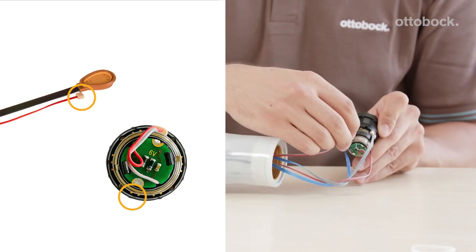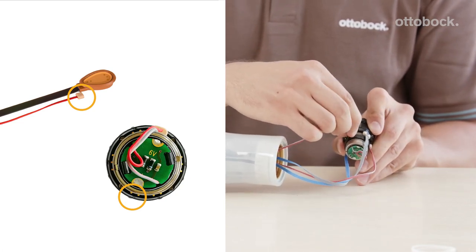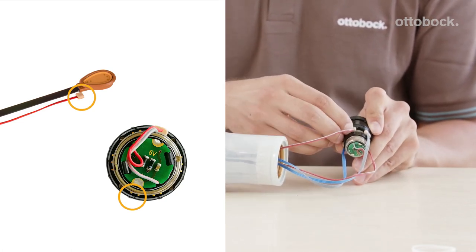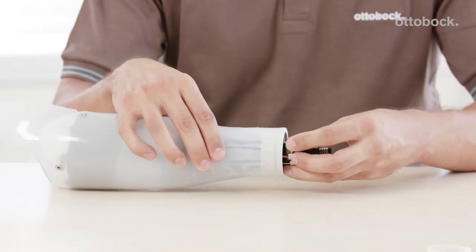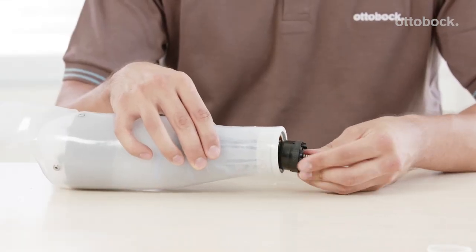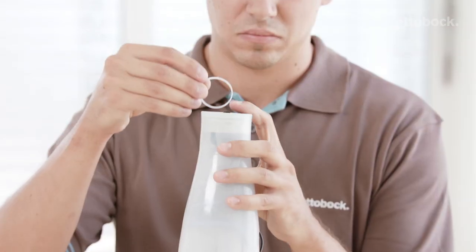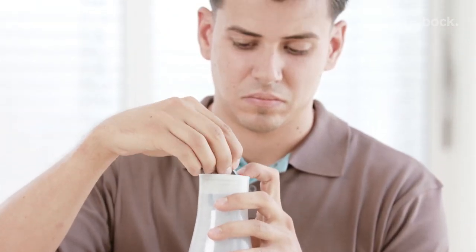Finally, connect the two-polled cable with the Myo Energy Integral to the left number 1 contact. Now, insert the electric wrist rotator into the lamination ring and fix with the lock ring.